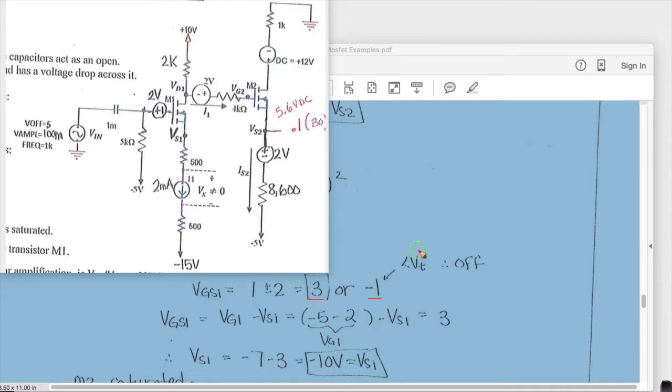But the minus 1 when VT is 1 means that it will be off. So that's not the valid choice so we're going to choose 3 and with 3 is greater than the VT of 1.